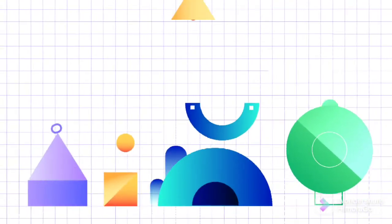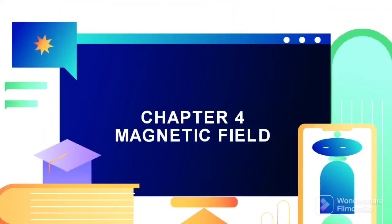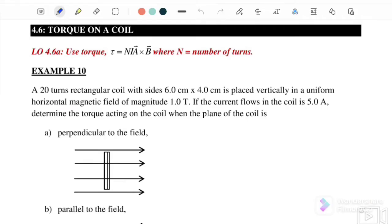Hello, welcome back to my channel. Today we continue with Chapter 4: Magnetic Field. In this video we are going to discuss Example 4.6 on torque of a coil. The equation we will use is torque equals n times I times A cross B, where n is the number of turns, I is the current, A is the cross-sectional area, and B is the magnetic field. We can also write it as torque equals nIAB sine theta.